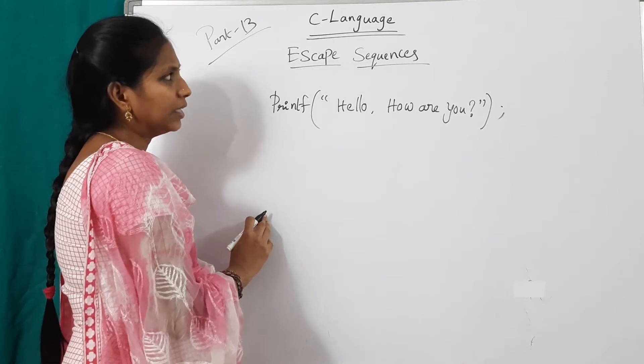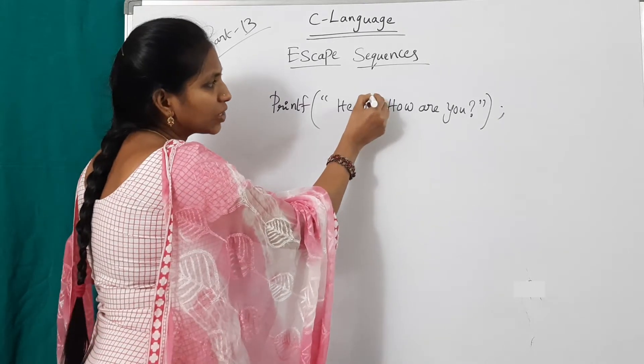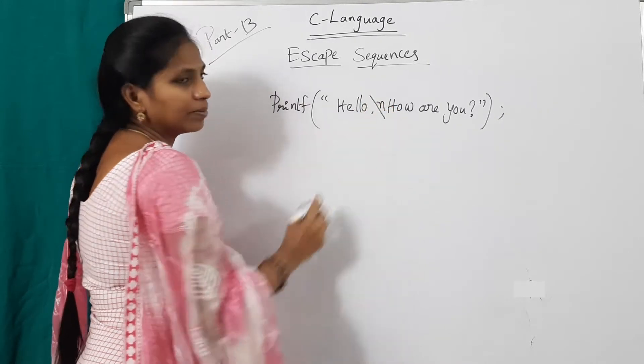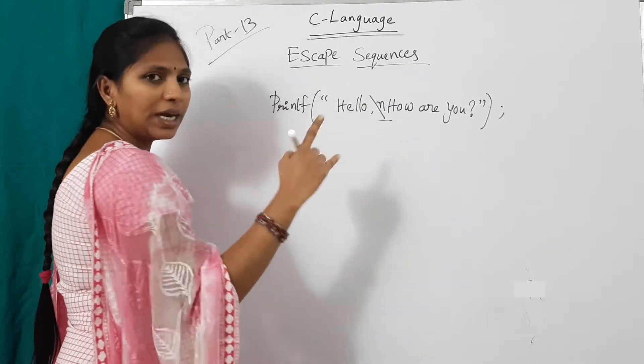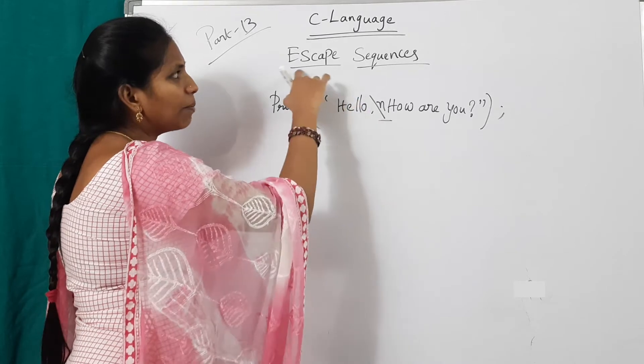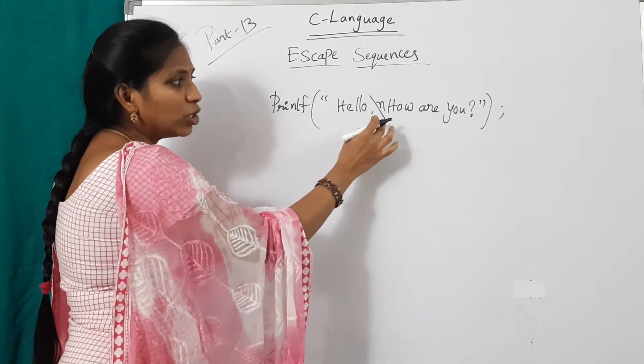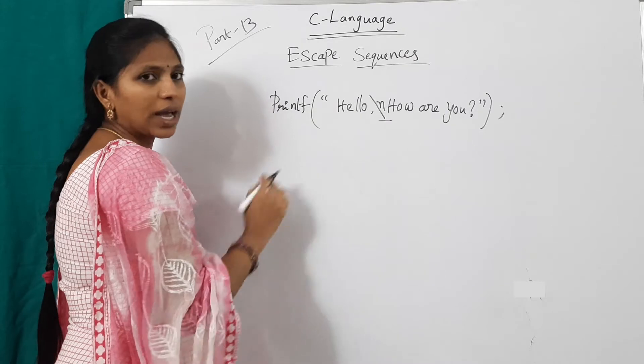To display like that, use slash n. Slash n. See, this slash n is already defined. This is an example of an escape sequence. It is used for next line. Slash n is for new line.